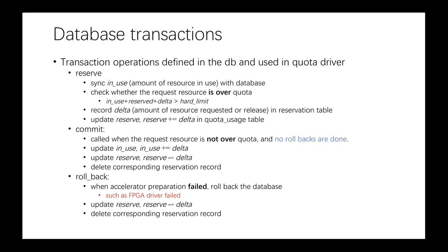These are the three operations or methods we shall implement in our quota management. First, whenever we have a resource request, we update the reservation table. Then, if there are no failures and the requested resources do not exceed the quota, we update the record in the quota usage table. And if there are any failures in accelerator preparation, we throw back the database to its original state.